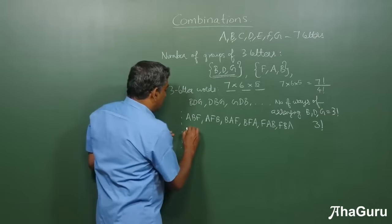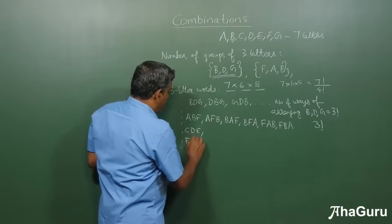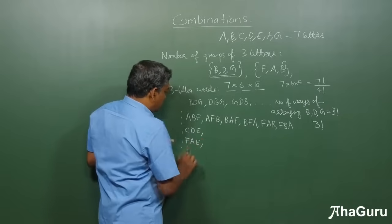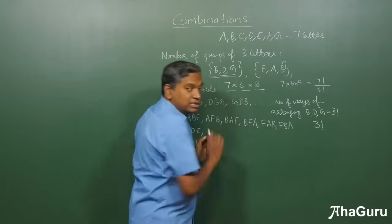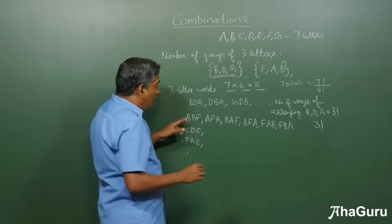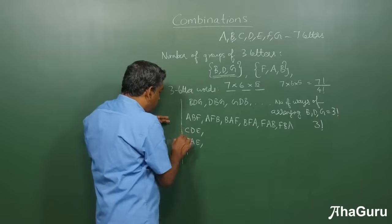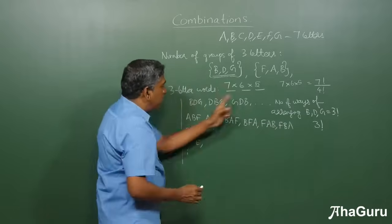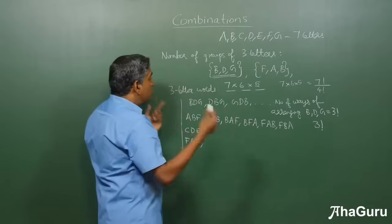Suppose the next group that I write is C, D, E, then F, A, E, right? Like that. Now, for each of these 3 letter groups, there will be 6 words. So, now the question is, how many such groups will be there if you count this as 1, 2, 3, 4, etc.?